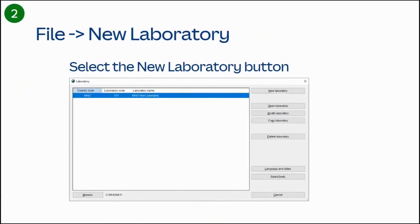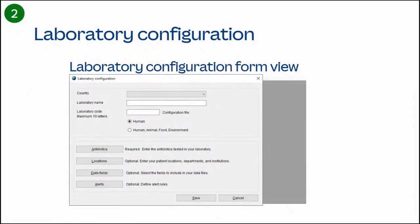Once you've opened the Hoonet software, click on the New Laboratory button to introduce your laboratory details. Once you've clicked on the New Laboratory button, a new window will appear with options for Country, Laboratory Name, Laboratory Code, Antibiotics, Locations, Data Fields, and Alerts.